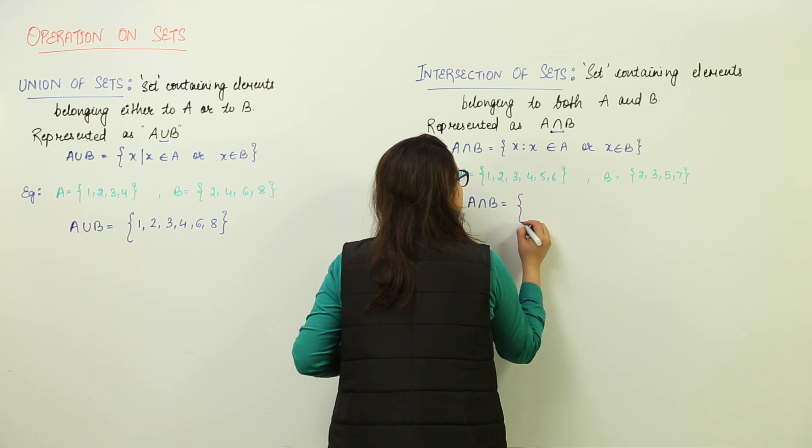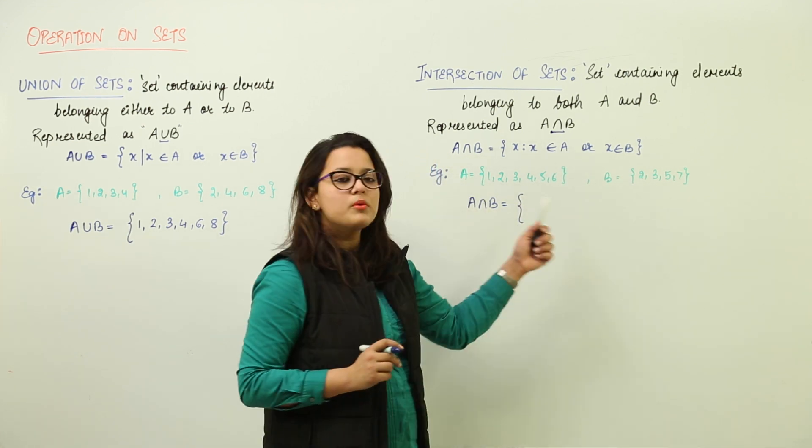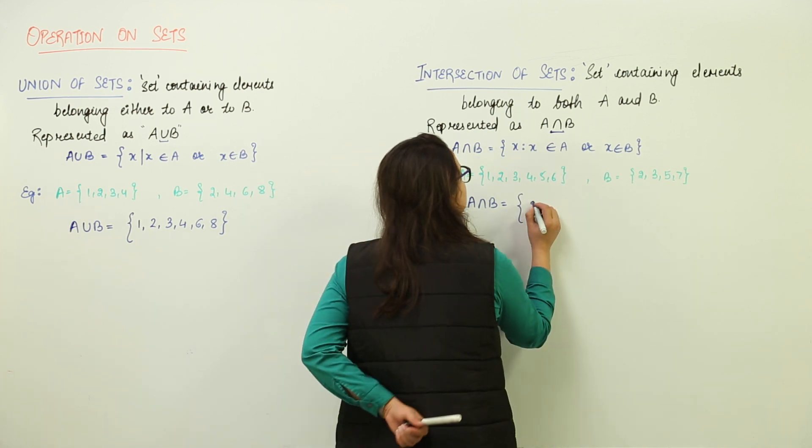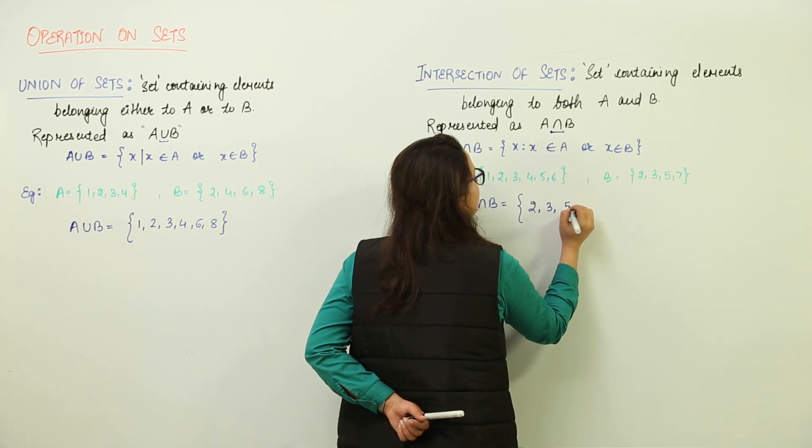For finding the intersection, we must consider the elements common to both sets A and B. So we have 2, 3, and 5.